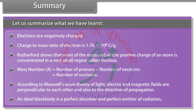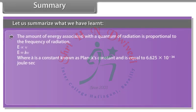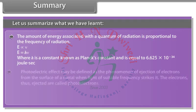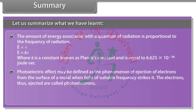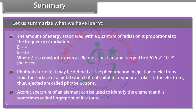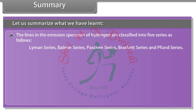An ideal black body is a perfect absorber and perfect emitter of radiation. The amount of energy associated with a quantum of radiation is proportional to the frequency of radiation, where Planck's constant h = 6.625 × 10⁻³⁴ joule·second. Photoelectric effect is the ejection of electrons from a metal surface when light of suitable frequency strikes it; the ejected electrons are called photoelectrons. Atomic spectrum of an element can be used to identify the element and is sometimes called the fingerprint of its atoms. The lines in the emission spectrum of hydrogen are classified into five series: Lyman, Balmer, Parschen, Brackett, and Pfund series.